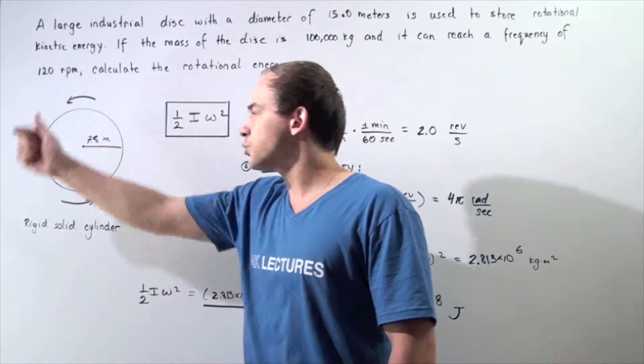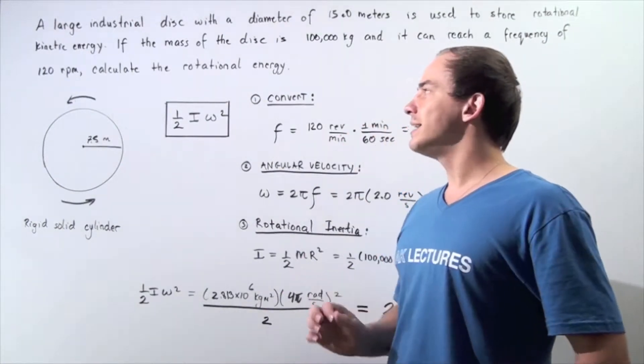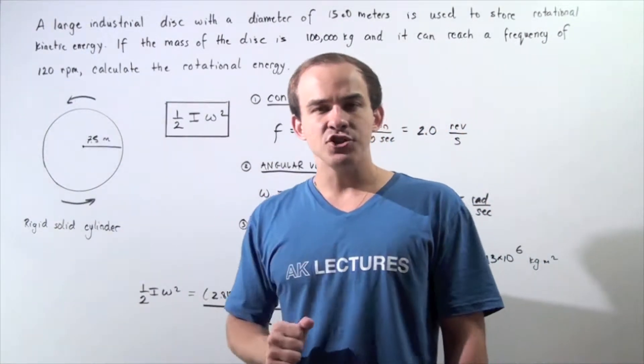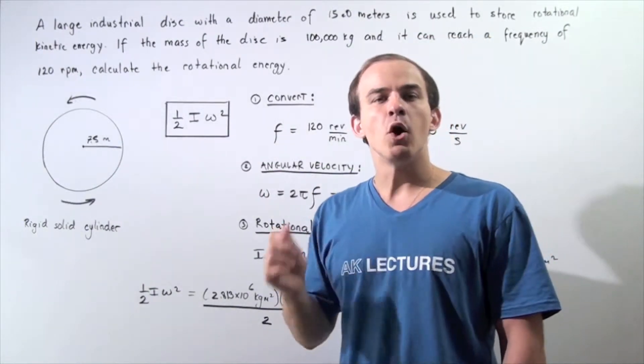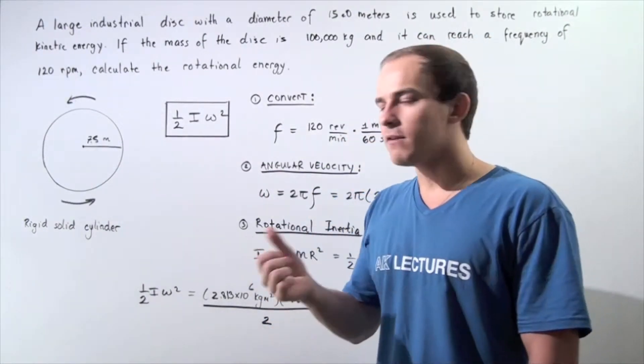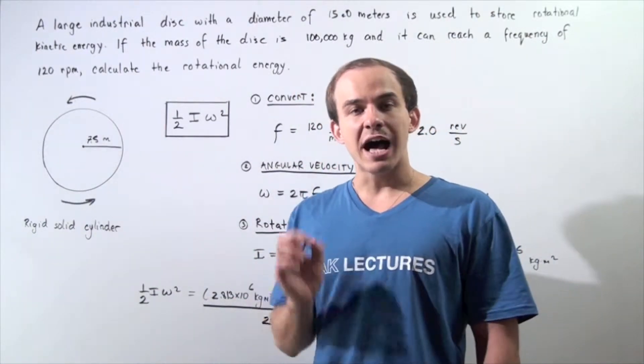Let's suppose our disk is rotating in the positive counterclockwise direction. So to find the rotational kinetic energy, we have to use the following formula: one half multiplied by the moment of inertia of the object multiplied by the square of the angular velocity.